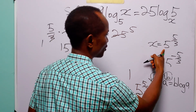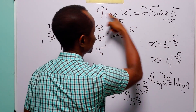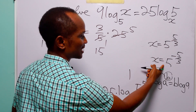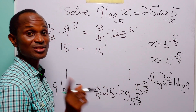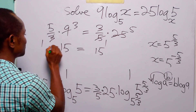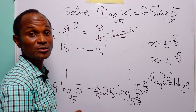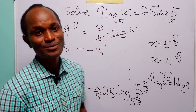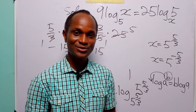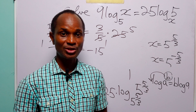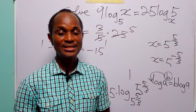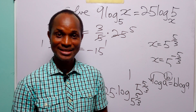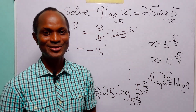Hence this value of x satisfies the original equation. The same thing happens with x = 5^(−5/3); the only difference is that this gives −15 = −15. With that, we come to the end of today's tutorial. I hope you learned something new. If you enjoy such content, please subscribe to the channel and leave a like to support the channel. Thanks for watching, and see you in the next video!